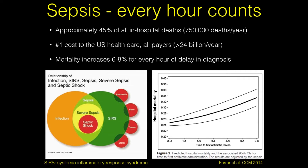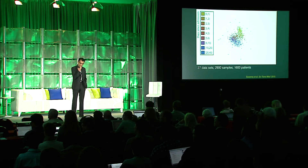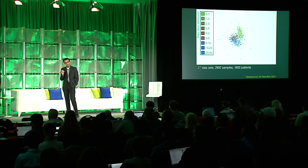What is sepsis? Sepsis is the intersection — a systemic, whole-body inflammation caused by infection. You could have whole-body inflammation from other causes like burn, gunshot wound, or trauma, but that's not what we're interested in. We're interested in sepsis inflammation caused by infection. Tim Sweeney, a very talented postdoc in my group, took on this huge challenge. He collected every clinical study he could find — about 27 datasets, more than 2,900 samples, all from humans, and 1,600 patients.